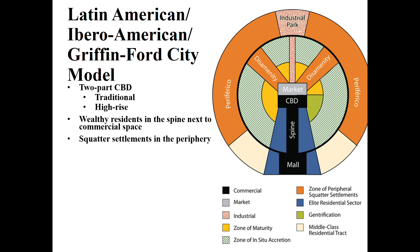Squatter settlements are for people who are often new immigrants to the city — migrants moving from some other part of the country for a better life. In the developing world models we're looking at today, the poorest people live on the outside. This is very different from U.S. urban models, where the nicest housing is often on the outside because that's where the cheap land is and you can afford to build giant houses. So it's very different when you compare the U.S. models to these foreign models.